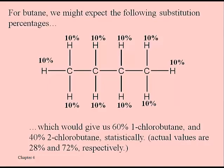Part 11, here we go. Here's that same slide and you should convince yourself that the 60% and 40% are indeed what we would predict for our products if we didn't know any better — if we didn't know that there was a preference for those hydrogens in the middle to be pulled off, or abstracted, as they put it. These percentages of 28 and 72 can't be predicted, but those are found to be the actual percentages when this reaction is carried out.